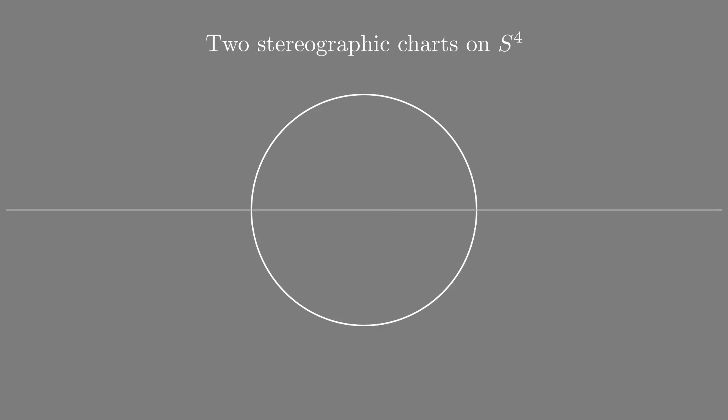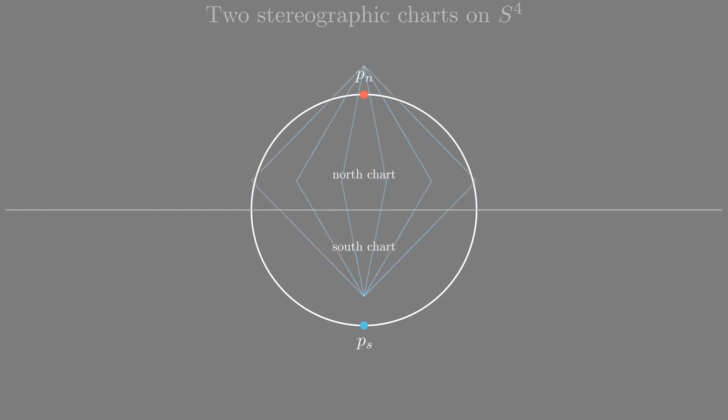Remember the clutching construction? To understand the clutching function, we look at the four-spheres using these two stereographic charts. Each chart comes from projecting away from one pole. On the region where they overlap, the point has two different coordinate descriptions. You can see the transition map geometrically. Take a point Q on a sphere. Project it from the North Pole down to the equatorial plane, and you get one coordinate for Q. Project it from the South Pole, and you get another coordinate.